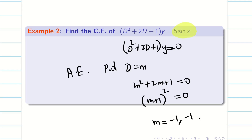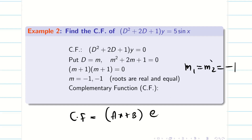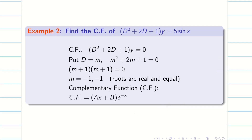The roots are real but equal. Since m1 and m2 are both equal to −1, the complementary function takes the repeated-root form (ax + b)·e^(mx). Here m = −1, so the CF is (ax + b)·e^(−x).